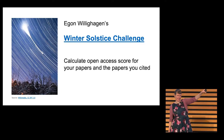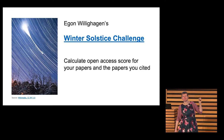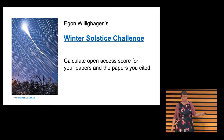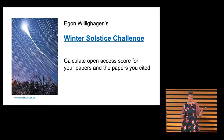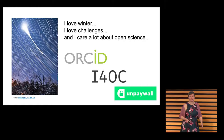So this picture — what's this? Tell me afterwards. It was a picture that Egon used for his Winter Solstice Challenge, where he challenged people to find out the percentage of papers that you yourself publish open access and what you cite that's open access. So he put it online. Well, I love winter, I love being here, I love challenges, and I care a lot about open science. So I thought I'd take this on.